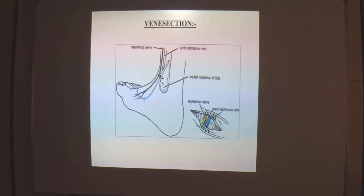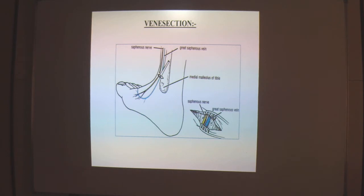Venous section is the procedure of drawing or removing blood from the circulatory system through a small incision or puncture for the purpose of analysis, blood donation, or treatment of blood disorders. The GSV is very commonly used for venous section near the ankle region. It is done in severely dehydrated patients where other superficial veins are collapsed, as the GSV's superficial position allows easy access. Care should be taken not to damage the saphenous nerve, which supplies the medial border of the foot up to the great toe.